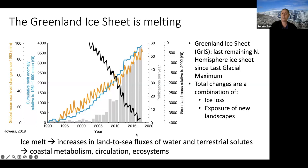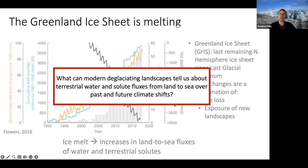What we're going to talk about today is the flip side of this story. As the Greenland ice sheet loses mass and delivers increasing meltwater fluxes to the coast, it is also exposing new landscapes that contribute water and solutes to the coast, but likely differ in quantity and composition. The overarching question of the SELA project is: what can modern deglaciating landscapes tell us about terrestrial water and solute fluxes from land to sea over past and future climate shifts?